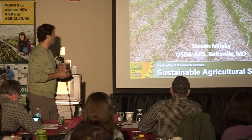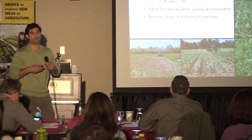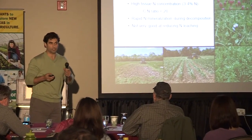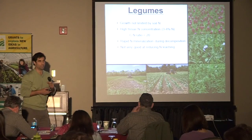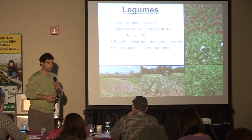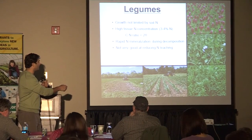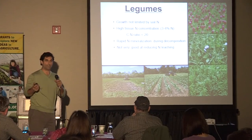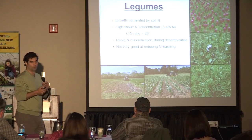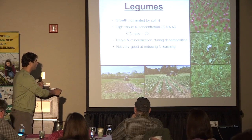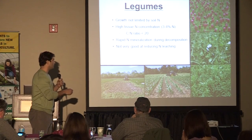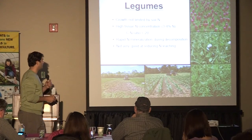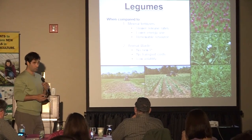We're going to talk about managing nitrogen with cover crops. Obviously the first step in thinking about providing nitrogen to your subsequent cash crop is going to be starting with legumes and what we can do with legumes. They're certainly the source of new nitrogen into the system. Generally legumes have fairly low C:N ratios. Most legumes are all below 20, ranging between 10 to 18 as far as their carbon to nitrogen ratios. They rapidly mineralize nitrogen and decay.